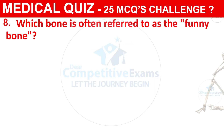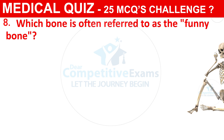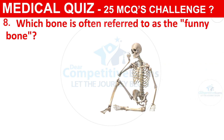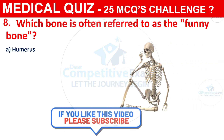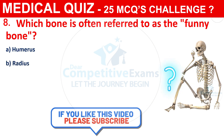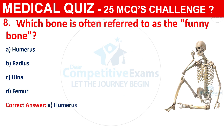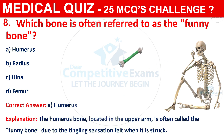Question 8: Which bone is often referred to as the funny bone? The options are Humerus, Radius, Ulna, or Femur. The correct answer is A, that is Humerus. The humerus bone, located in the upper arm, is often called the funny bone due to the tingling sensation felt when it is struck.